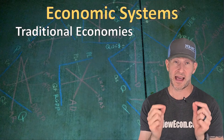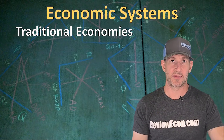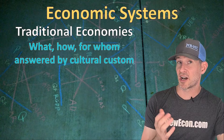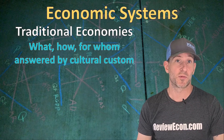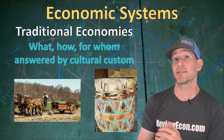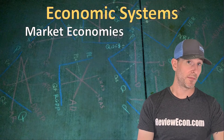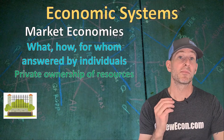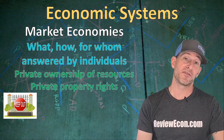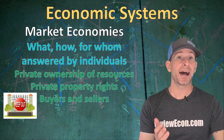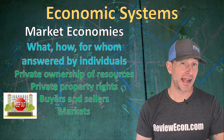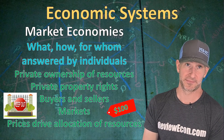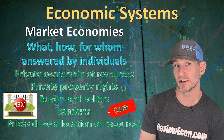Let's talk about the three economic systems that answer those three basic questions. First, we have traditional economies — what gets made, how it gets made, and for whom is determined by cultural custom. In the United States, we are a mixed economy with aspects of all three pure systems; we see aspects of traditional economies with the Amish and on indigenous reservations. The next pure economic system is a market economy, where what gets made, how it gets made, and for whom is determined by individual people. In a market-based economy, private ownership of resources and enforcement of private property rights are very important. Individual buyers and sellers make decisions on their own, interact within markets, and prices drive the allocation of resources and goods and services. Capitalism and American free enterprise are examples of economies close to a pure market system.